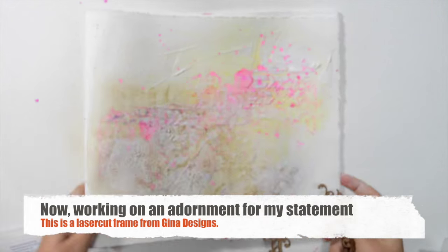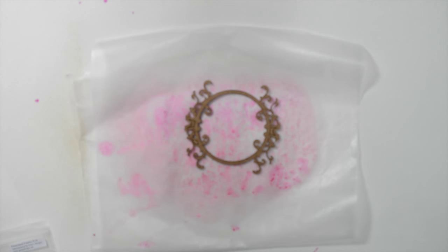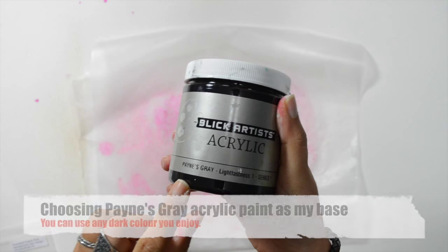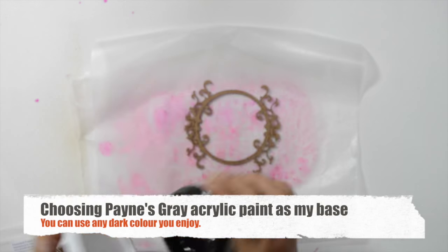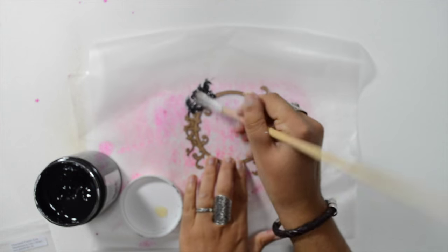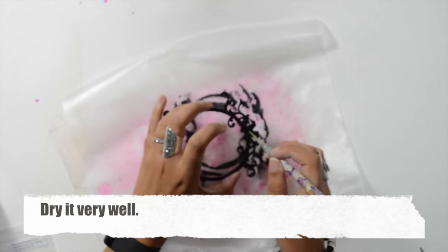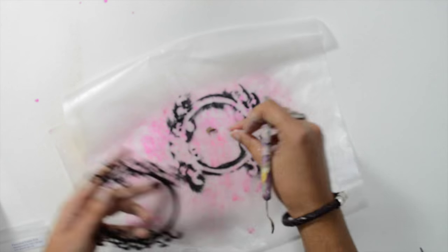Now using a frame, it's a die cut from Gina's Designs, to accentuate my statement stamp. I wanted a dark base but I didn't want black, so I use Payne's Gray which is a very dark blue.